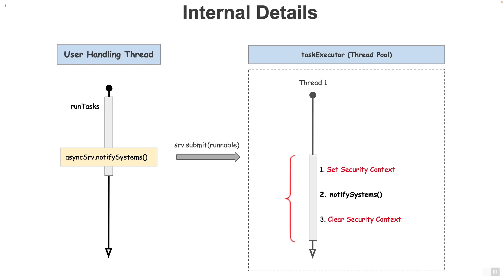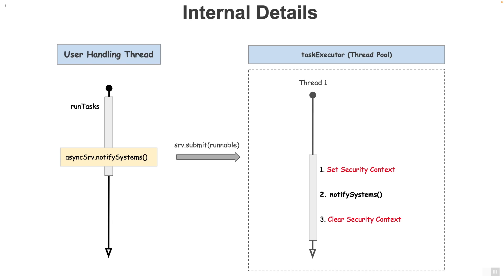If we use the DelegatingSecurityContextAsyncTaskExecutor, the task will first set the securityContext correctly on Thread1, basically copying it from the user handling thread — marked as step 1. After that, it will proceed to execute the notifySystems method, marked as step 2, and then finally clears the securityContext, marked as step 3. It's important to understand that Thread1 continuously handles other tasks. So setting the securityContext and later clearing it guarantees that the user's securityContext is available only for that particular call of notifySystems. The next task run on Thread1 cannot see that securityContext.